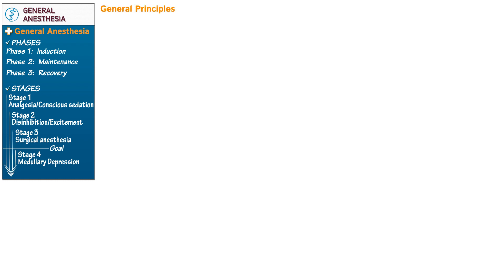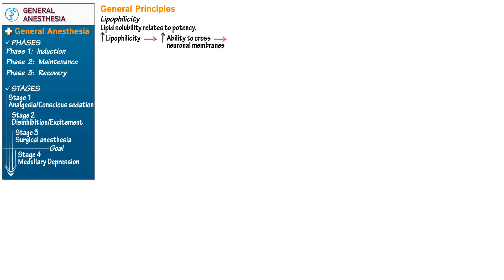Now let's learn some general principles of anesthesia, starting with key definitions. First, lipophilicity: the lipid solubility of a drug directly relates to its potency. Drugs with high lipophilicity more readily cross neuronal membranes and thus have increased potency, reaching their target receptors more quickly than drugs with poor lipophilicity.